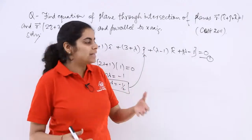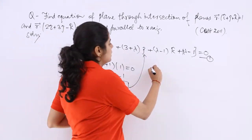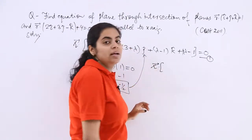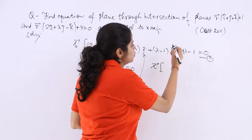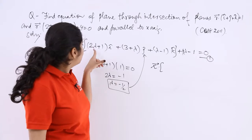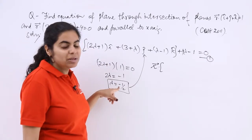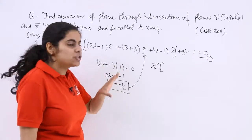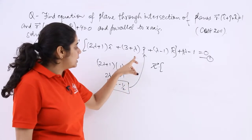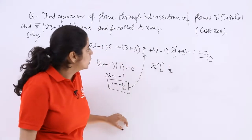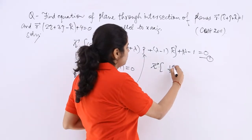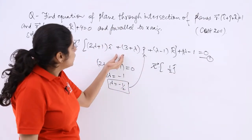When you put minus 1 by 2 here what do you get? r vector is there and one more thing to notice: the bracket should close here. 2 lambda plus 1 means 2 into minus 1 by 2 plus 1 which is 0 i cap, just remove it.